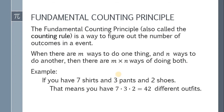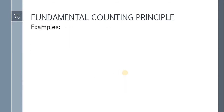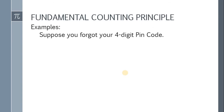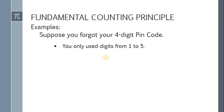Now let's have another example. Suppose you forgot your 4-digit PIN code on your cellphone — hopefully that won't happen. While making your PIN code, you only used digits from 1 to 5, so no 0, 6, 7, 8, or 9. Also, you know for sure that the first digit is not 1. The question is: how many PIN codes do you need to check to unlock your phone?